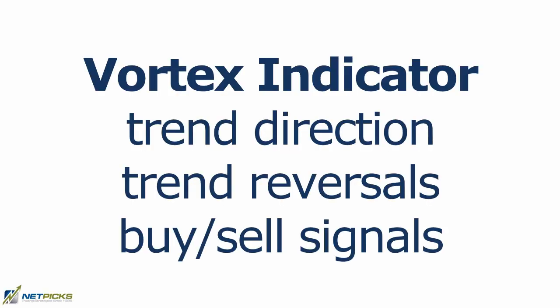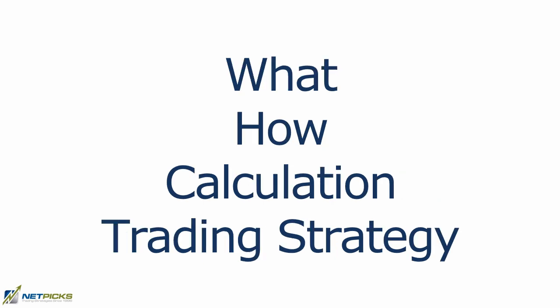Traders who follow the trend may want to start looking at the Vortex Indicator. We can use it to not only determine our trend direction but it can also point to reversals and buy/sell signals. The Vortex was invented by a pair of Swiss market analysts. It's pretty simple to understand but I think it can be pretty powerful in how simple it actually is. I want to talk about what it is, how to read it, how we calculate it, and how we can use it in a trading strategy.